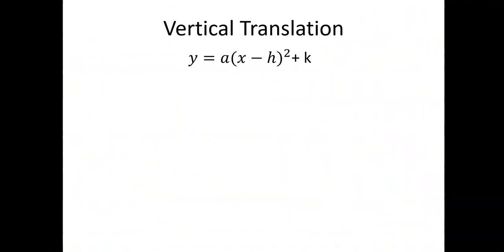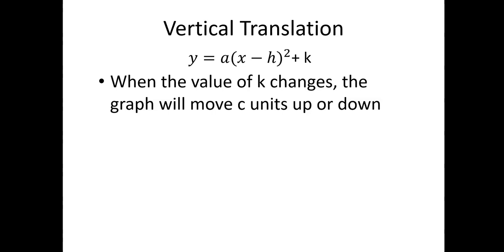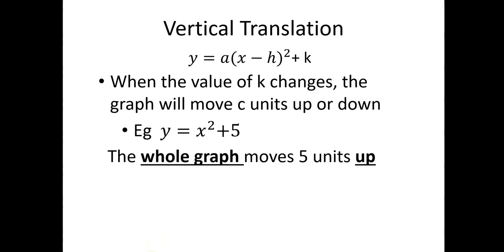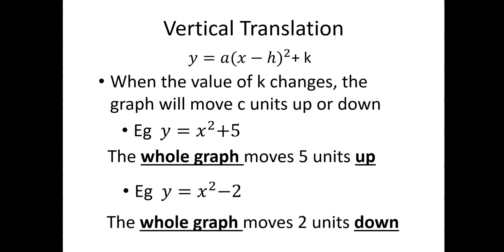Now let's look at vertical translations. You can see the general rule there. When the value of k changes, the graph will move k units up or down. For example, in the rule y is equal to x squared plus 5, this graph will move 5 units up from 0, 0 — so adding plus 5 to y is equal to x squared moves the entire graph 5 units up. In the graph y is equal to x squared minus 2, this graph will move 2 units down — the whole graph of y is equal to x squared will move 2 units down.